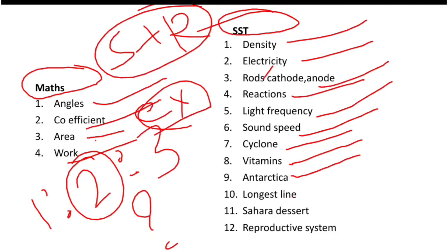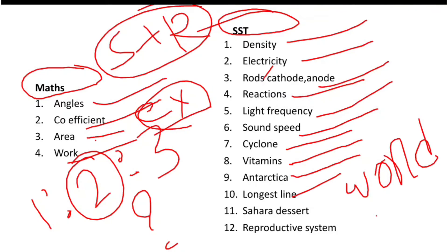Next is Antarctica. What is the longest line in the world? Next is the Sahara Desert, which is in Africa.